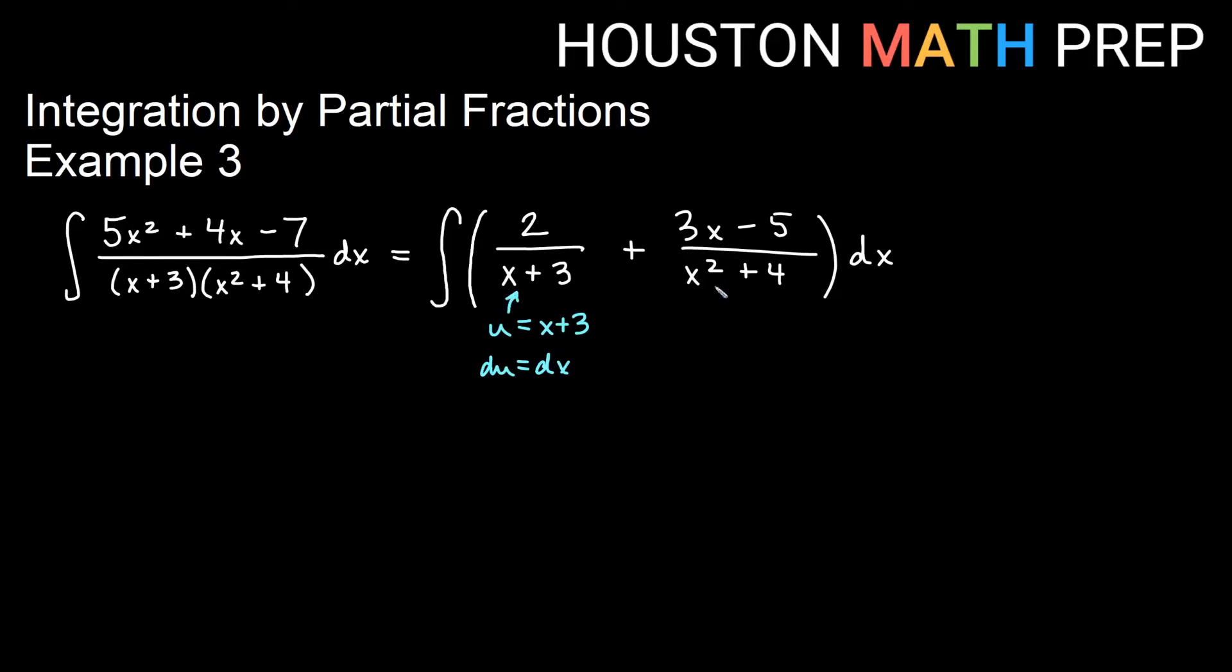For this one here, if I have an x or I have a constant, it's going to depend. So what we're going to need to do is actually break this up into two pieces. We're going to want to think about the integral of 3x over x squared plus 4 dx, and then we'll also need to think about minus the integral of 5 over x squared plus 4 dx.